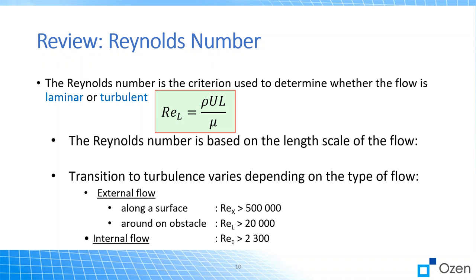We determine if flow is turbulent by calculating the Reynolds number, which is a function of fluid density, velocity, characteristic length scale, and viscosity. It's hard to know exactly, so you always want to perform this calculation in advance of solving your model. In some cases you'll need to get a preliminary solution and then recalculate the Reynolds number to really understand the level of turbulence.